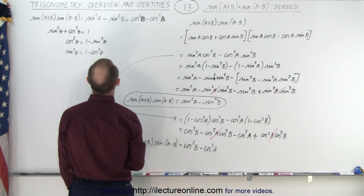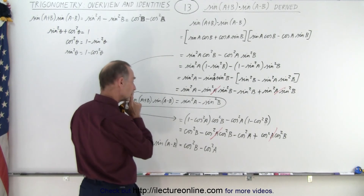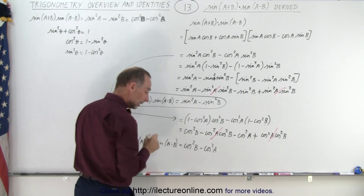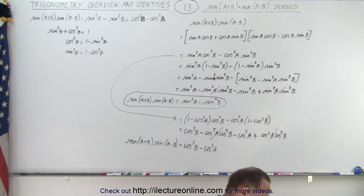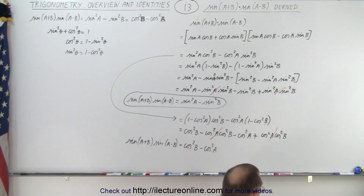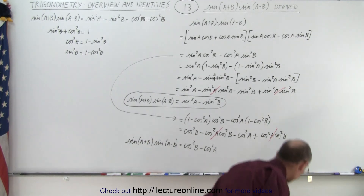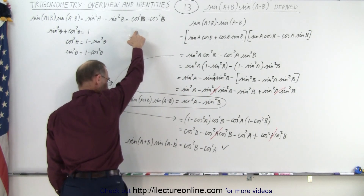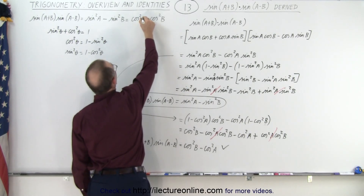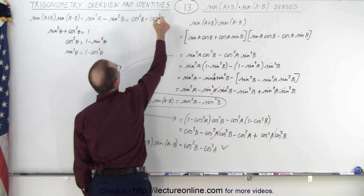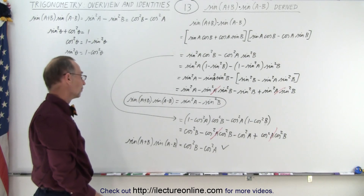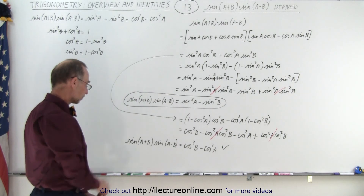Wait — checking what's written on the board, it shows a plus sign instead of a minus. Let me verify which is correct. Looking it up: cosine squared(B) minus cosine squared(A) is indeed correct. So the original writing on the board had the wrong sign — it should be cosine squared(B) minus cosine squared(A). Now we have the correct answer for both forms.